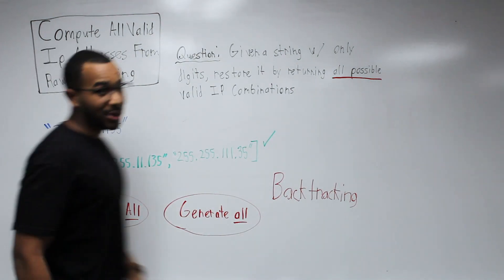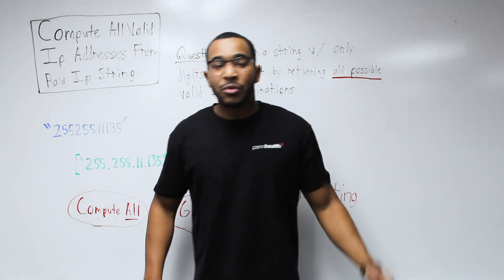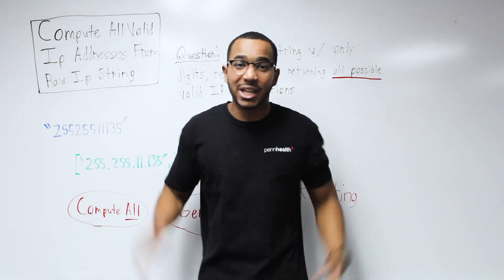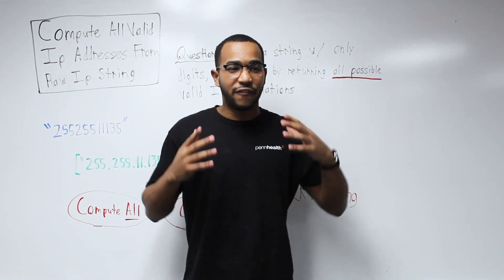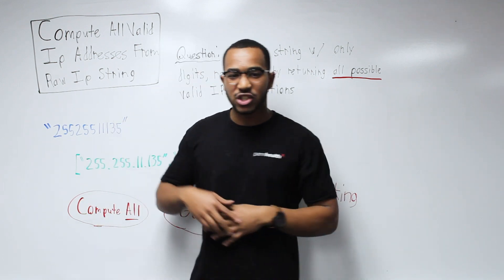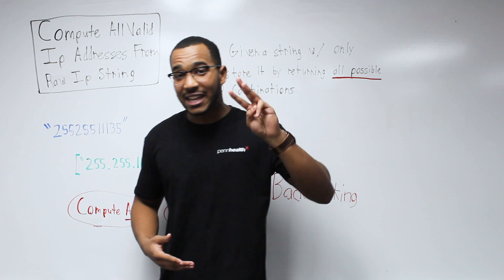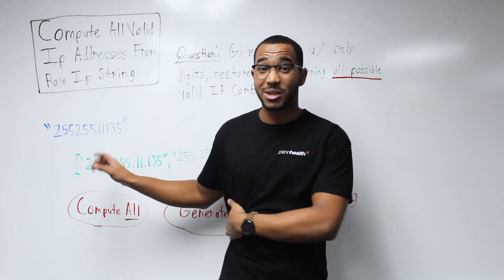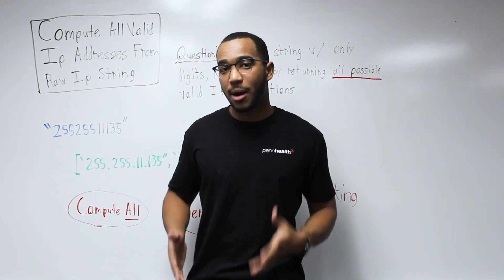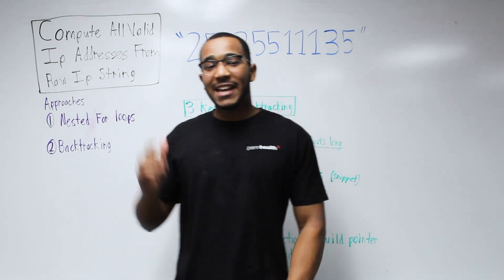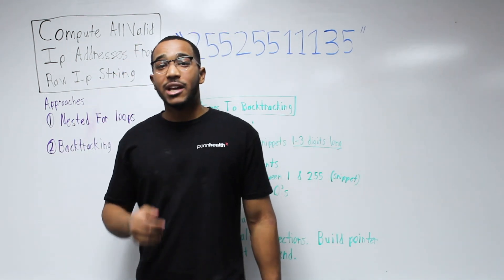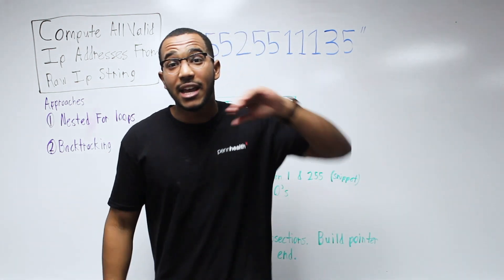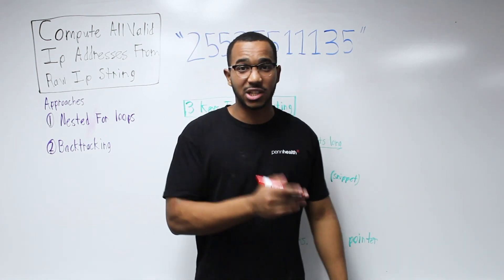When we see 'compute all,' 'generate all,' or 'all possible,' we know we're finding an exhaustion of a possibility space. Backtracking is all about finding all possibilities, generating more possibilities based on three key things we'll look at. Now that we know we're doing backtracking to generate these decompositions, let's look at our approaches. The key is to take snapshots of the string. Since we're using backtracking, we'll exhaust all possibilities, generating each subsection and then exploring.